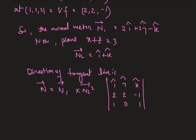Therefore the multiplication results in 2i cap minus 3j cap and minus 2k cap.